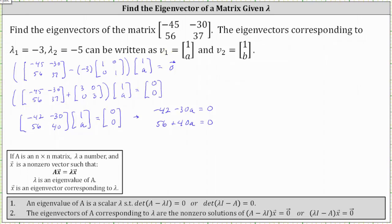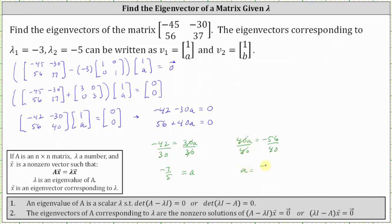To solve the first equation for A, let's add 30A to both sides, which gives us negative 42 equals 30A. Dividing both sides by 30 and simplifying, we get A equals negative 7 fifths. To solve the second equation for A, we subtract 56 from both sides, which gives us 40A equals negative 56. Dividing both sides by 40 and simplifying, we also get A equals negative 7 fifths.